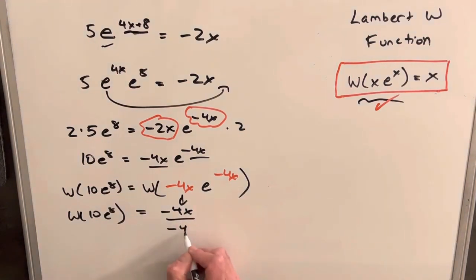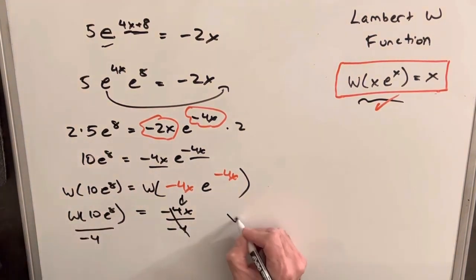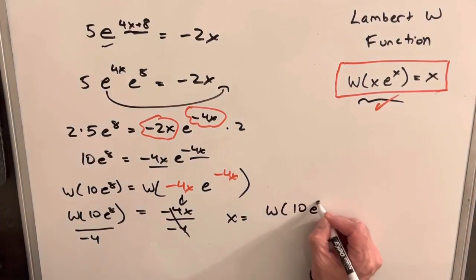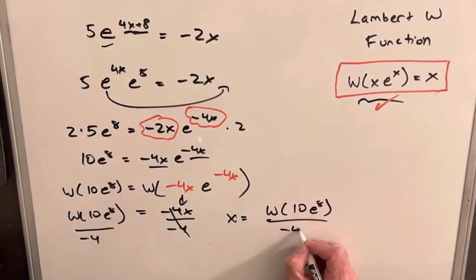Now we can just divide by minus 4. That'll cancel. So we have x equals Lambert W 10 e to the 8 over minus 4.